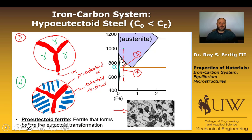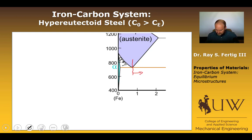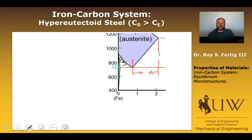Now let's move on to the hyper-eutectoid case. If hypo-eutectoid was a composition less than the eutectoid, hyper is a composition greater than the eutectoid — greater than 0.76 weight percent carbon. We also have to remain below 2.14 weight percent carbon; beyond that it would be a cast iron, not a steel. We'll choose some arbitrary location in the middle of that region and cool down to examine the microstructures.